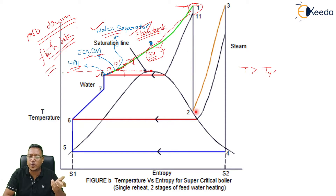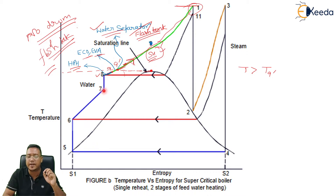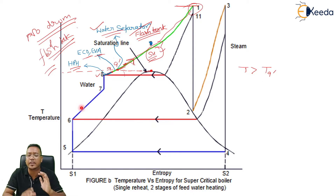From one to two is the HP turbine, two to three is the reheater, three to four is the LP turbine, four to five is the condenser, five to six is the CEP, six to seven is the LP heater, seven to eight is the BFP. By this way, the cycle will complete.